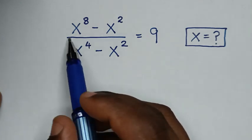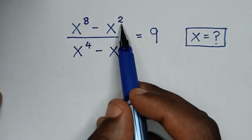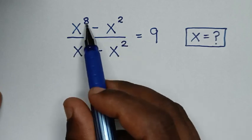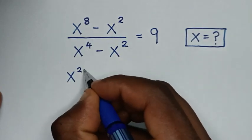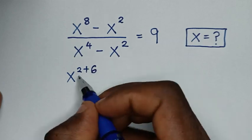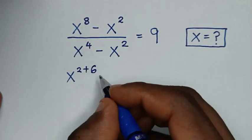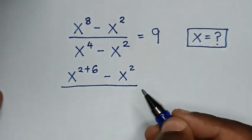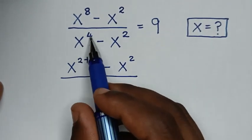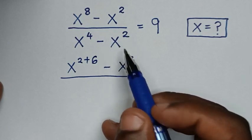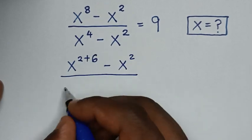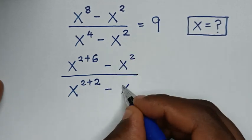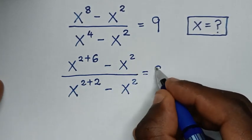Now, in the first step, from here in the numerator x power of 8 minus x power of 2, we make x power of 2 in common. So, this x power of 8 is same as x power of 2 plus 6. 2 plus 6 is power of 8. Then, minus this x power of 2. In the denominator x power of 4 minus x power of 2, we make x power of 2 in common. So, x power of 4 is same as x power of 2 plus 2. Then, minus this x power of 2 is equal to 9.